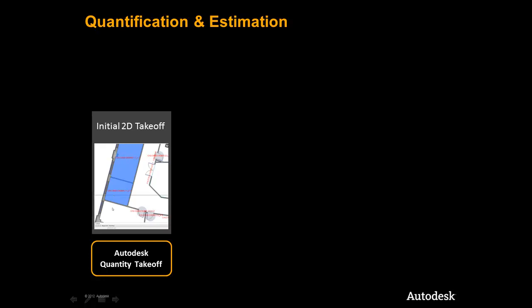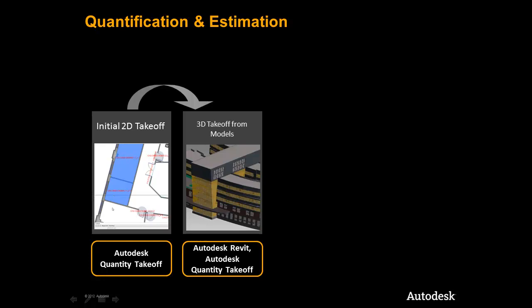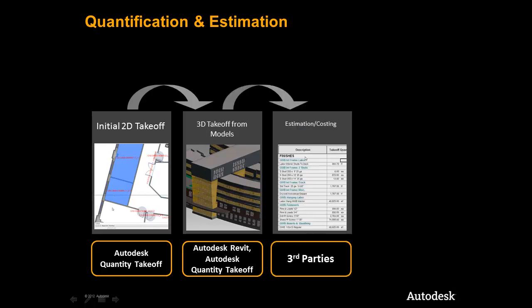Next, we move to leveraging a BIM and using the 3D models for quantification. We can generate quantities from a model in several ways, and this component will highlight the use of both Autodesk Revit and Quantity Takeoff. We will again see how an estimator can gain efficiencies in their quantification process by reducing the amount of time it takes to quantify the building components and produce more accurate results. We will then briefly highlight the Autodesk Construction Solutions' ability to connect with industry-leading estimation applications and pass valuable and accurate quantities generated into an existing estimation package.